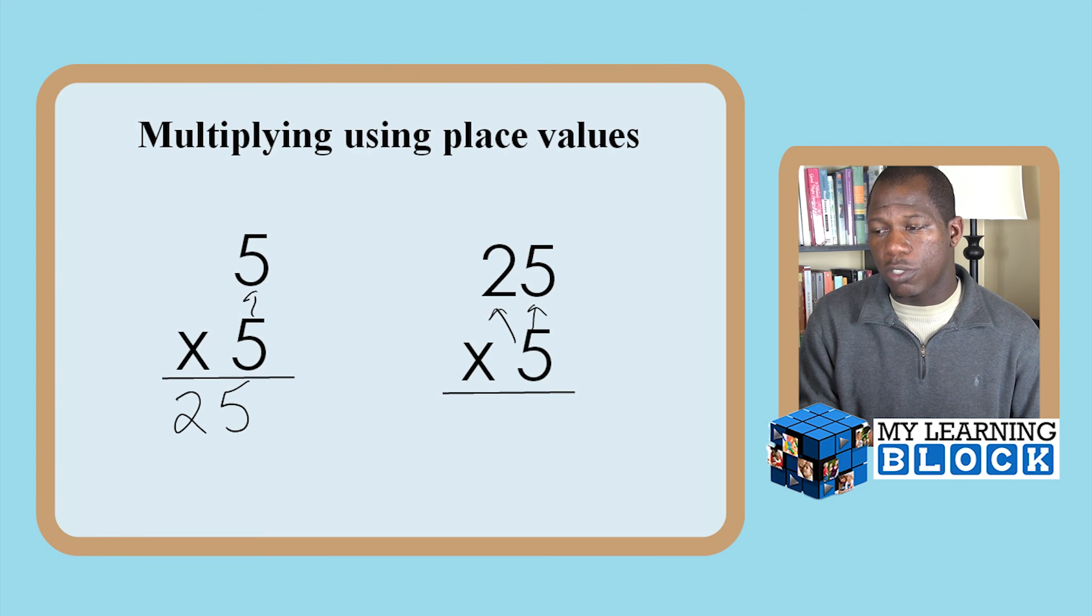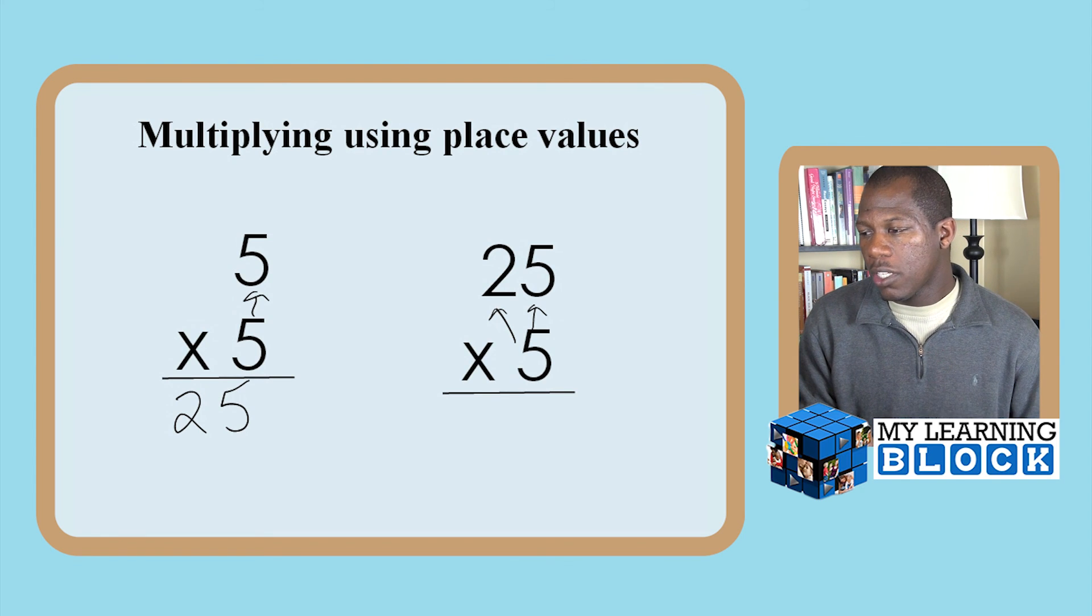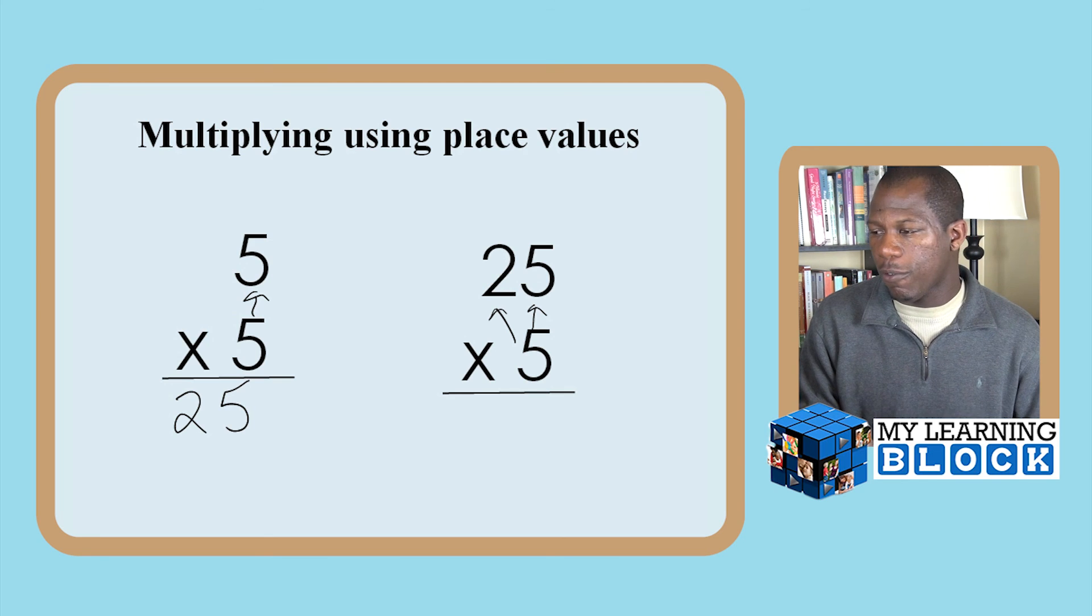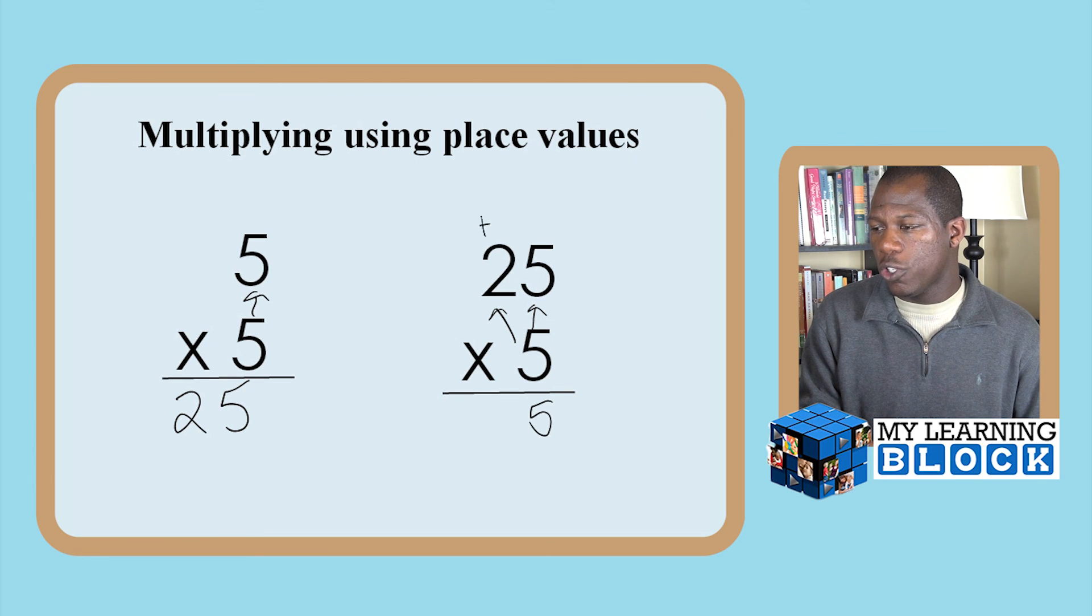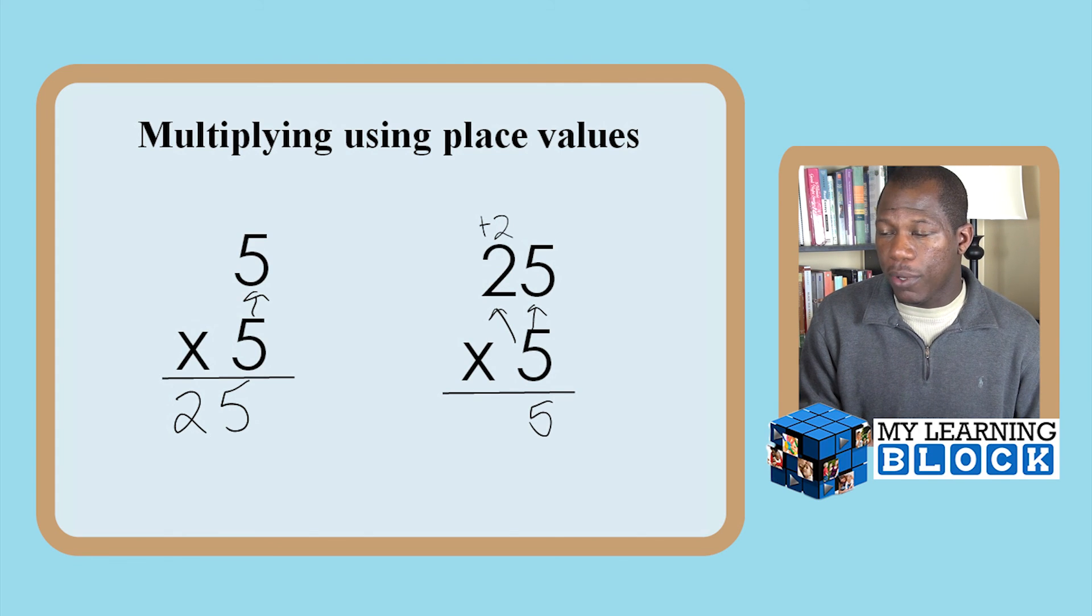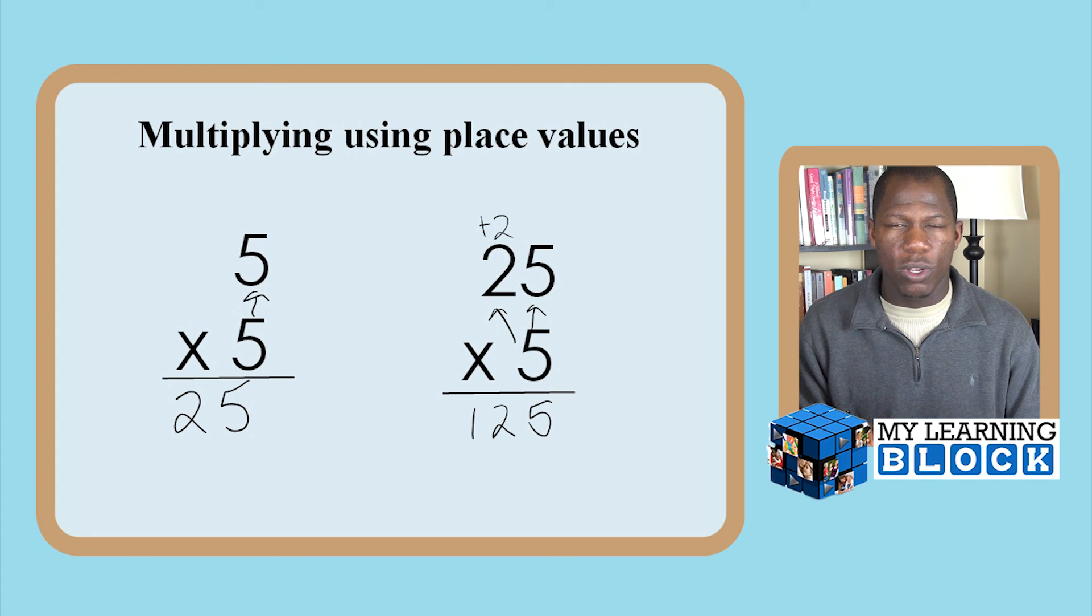In this problem we just multiply the number in the ones place. So if I multiply the number in the ones place for 25 times 5, I will get 5 times 5 equals 25, carry the 2, then 5 times 2 equals 10 plus 2 equals 12. Therefore, 25 times 5 is 125.